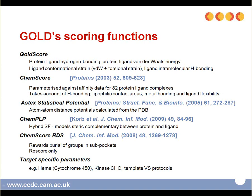A little bit more about the GOLD scoring functions. There are currently four scoring functions in GOLD and one rescore-only function. The first one, GoldScore, is the original scoring function. It is made up of four components: a protein-ligand hydrogen bond energy, a protein-ligand van der Waals energy, a ligand internal van der Waals energy, and a ligand torsional strain energy.